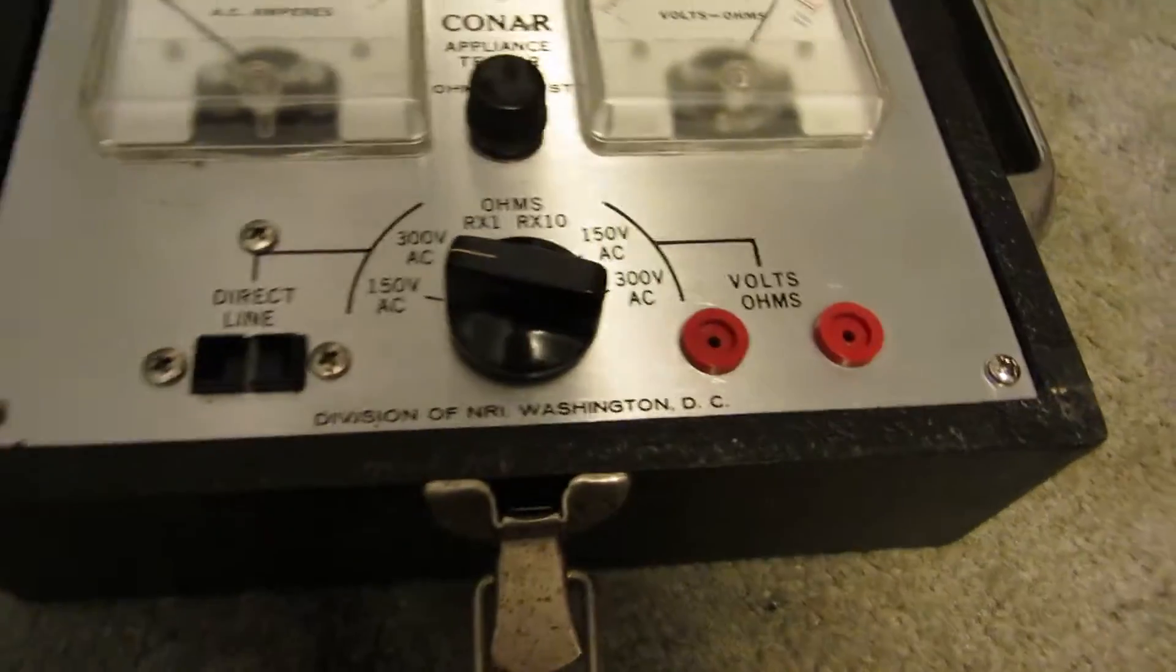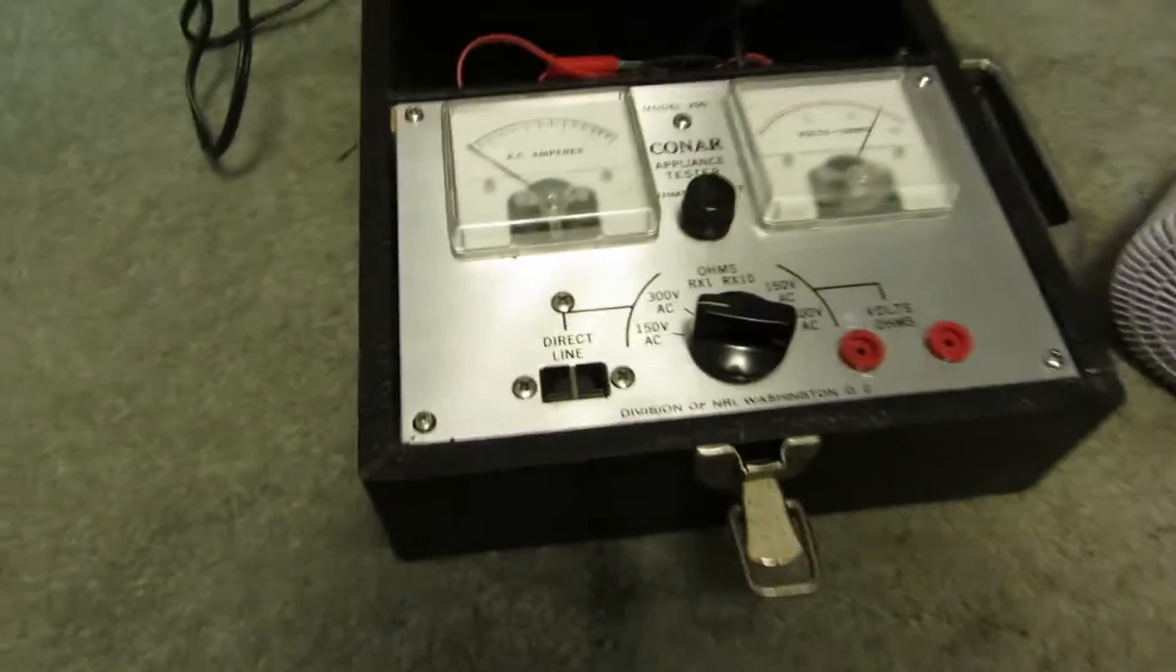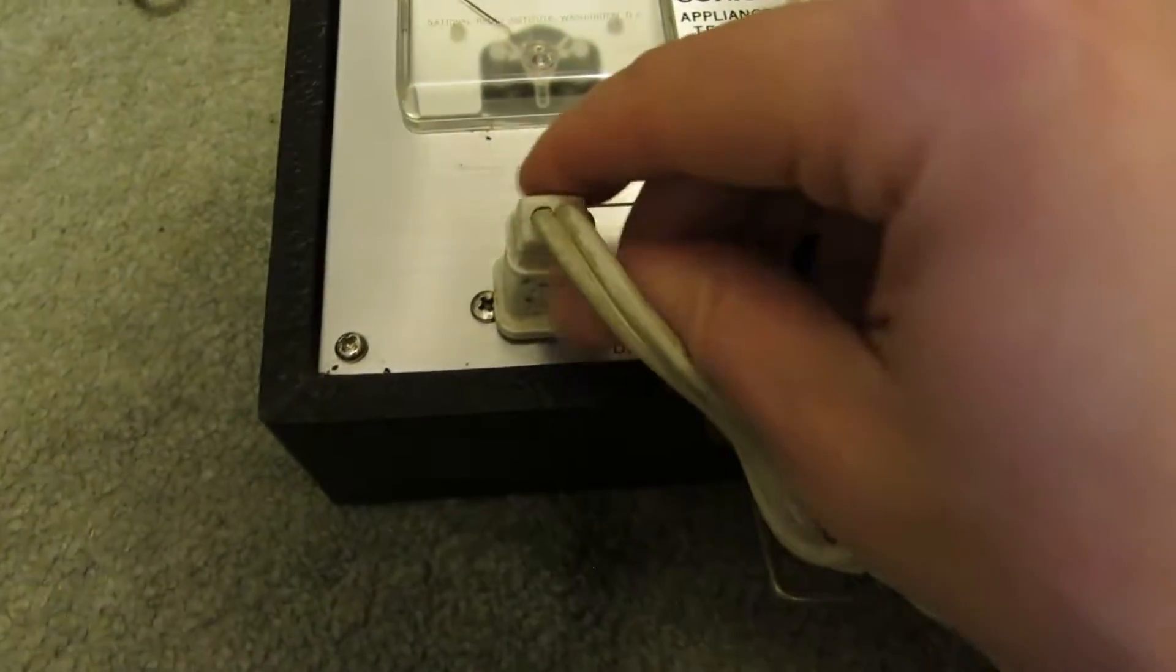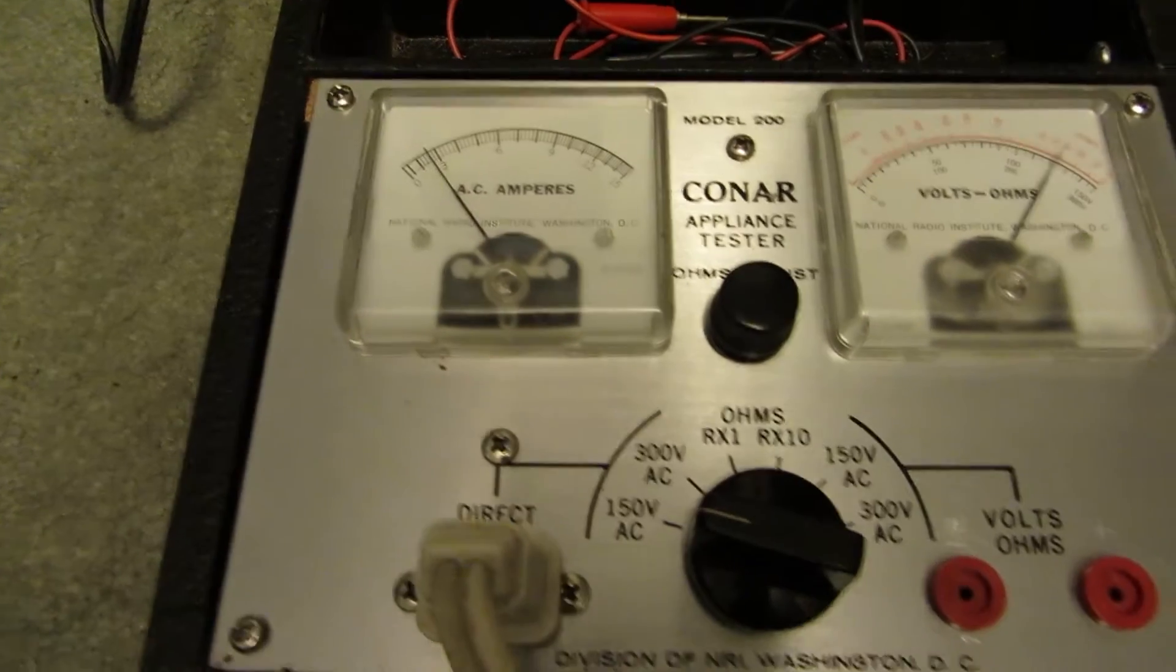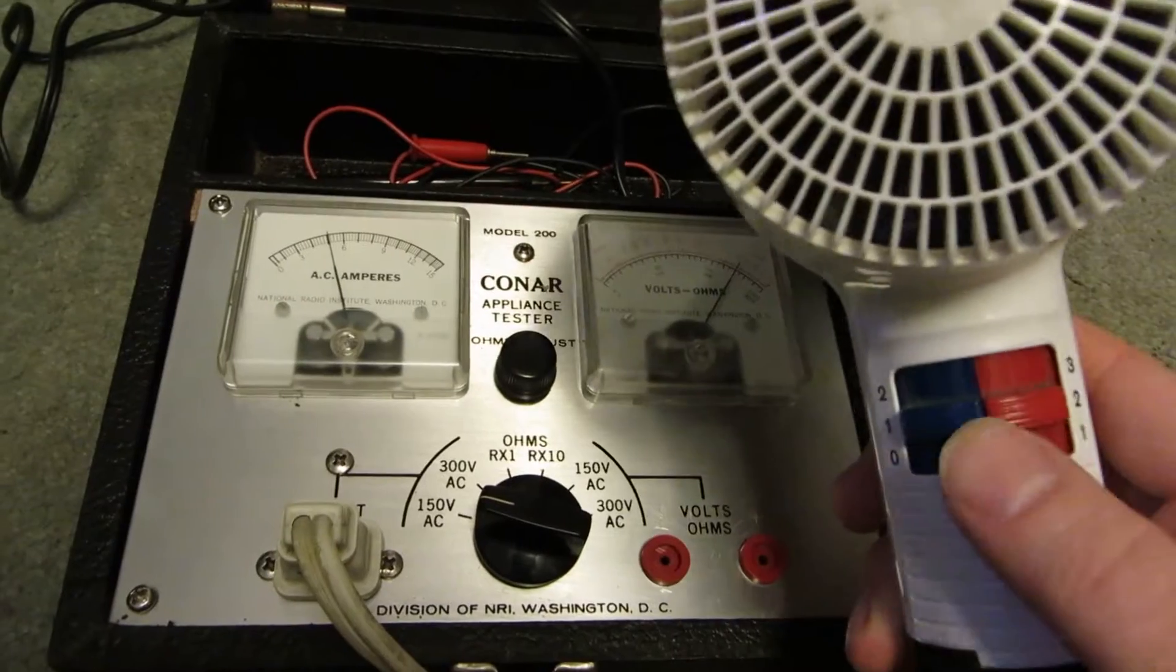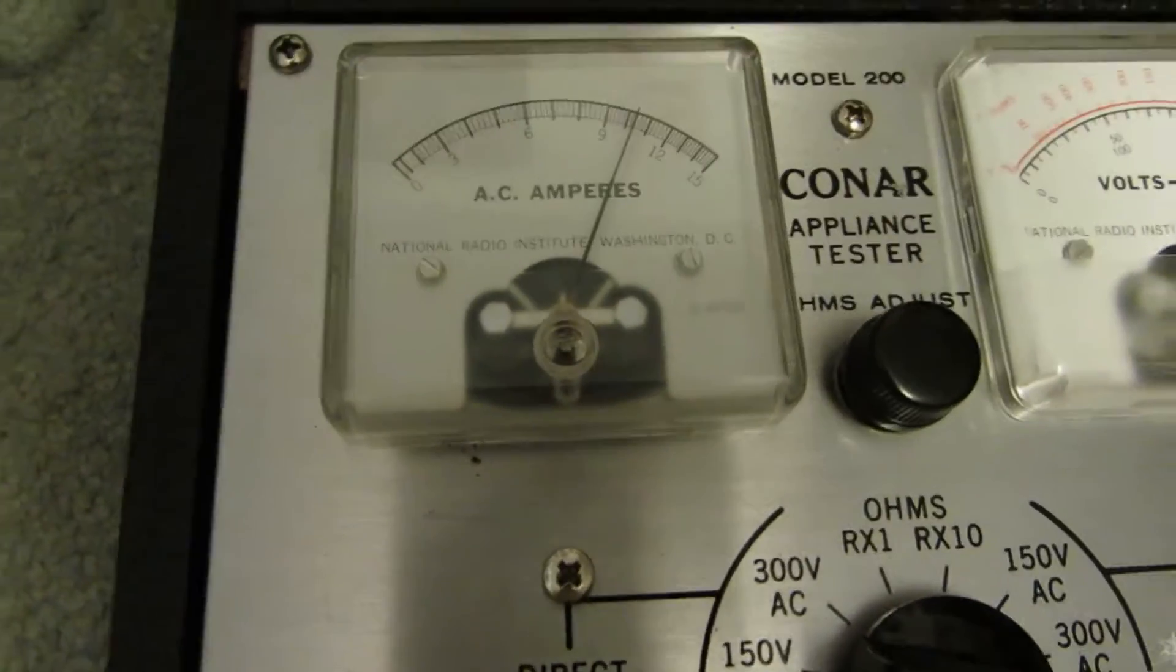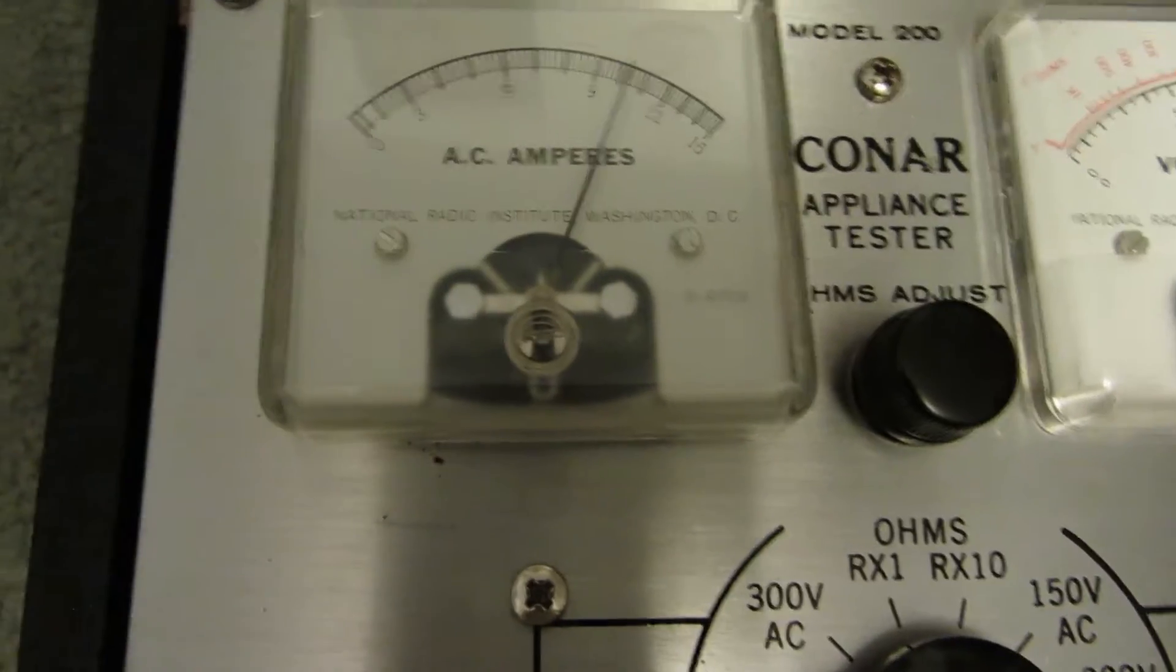So say you're testing a fridge and you wanted to see if the amps are okay. Well, I've got a hair dryer here. So what you do is you plug the hair dryer into the meter, and then you switch it on and you get an average reading. So right now, this hair dryer at full power is reading about 10.2 amps, 10.3, something like that.